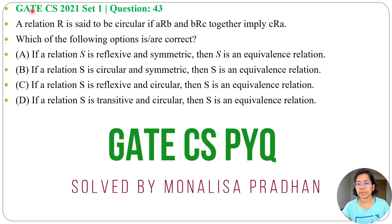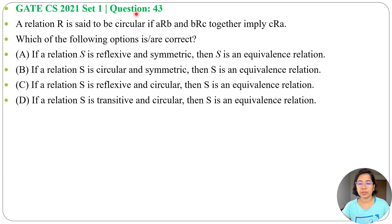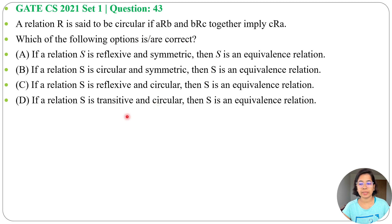Let's solve one previous question on relations. This question was asked in GATE CS 2021 Set 1, Question Number 43. A relation R is said to be circular if A is related to B and B is related to C together implies C is related to A. Which of the following options is or are correct? Four options are given.